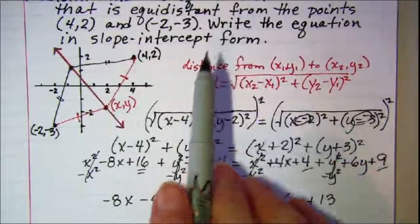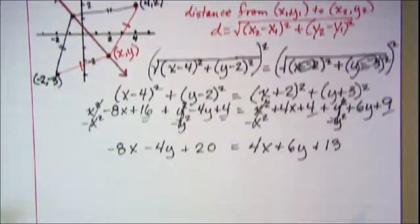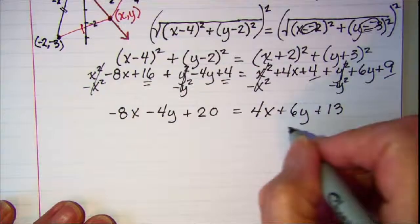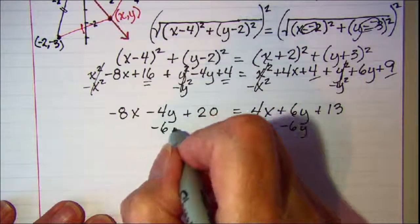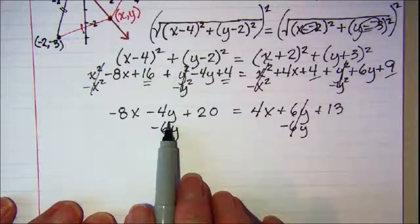Now our directions told us to write the equation in slope intercept form. So we want to get the y by itself. Let's subtract 6y from the right side and that will cancel off and put our y's over on the left side.